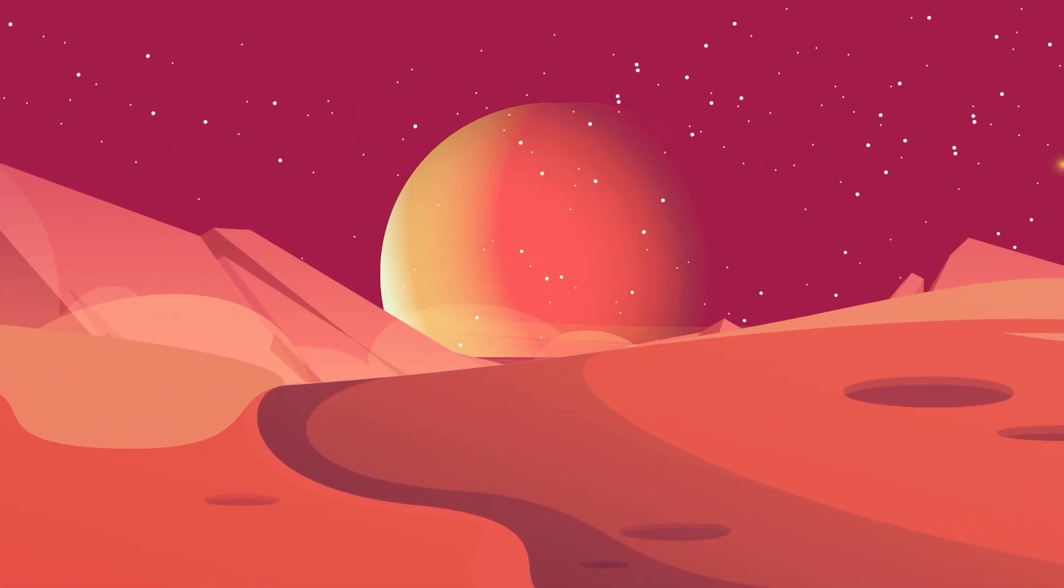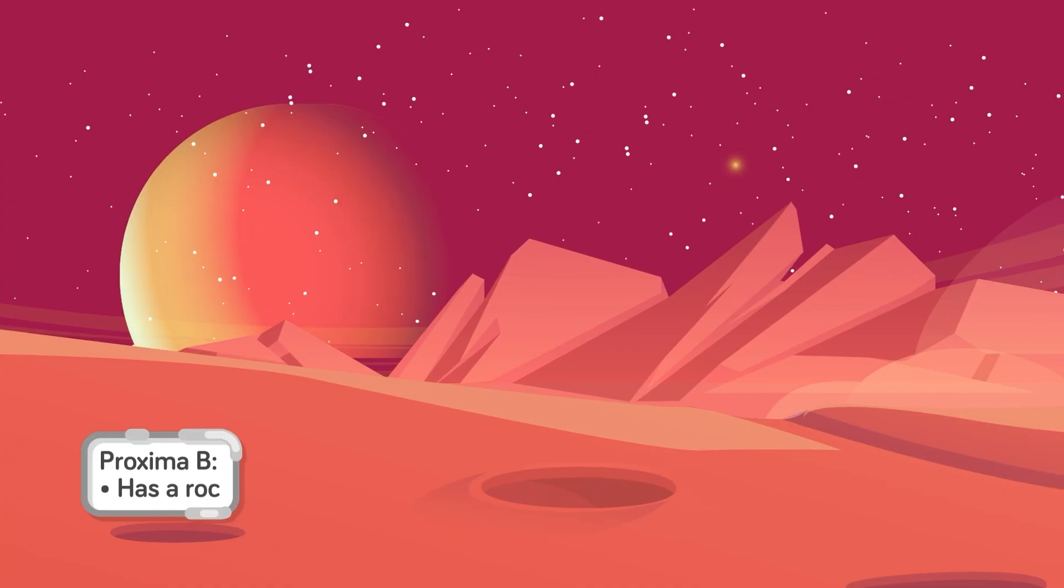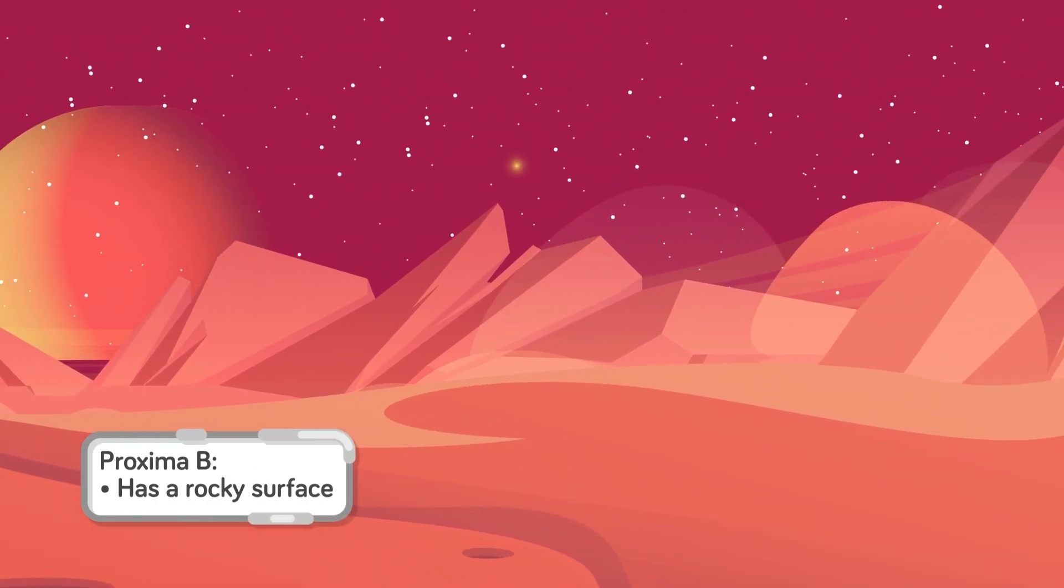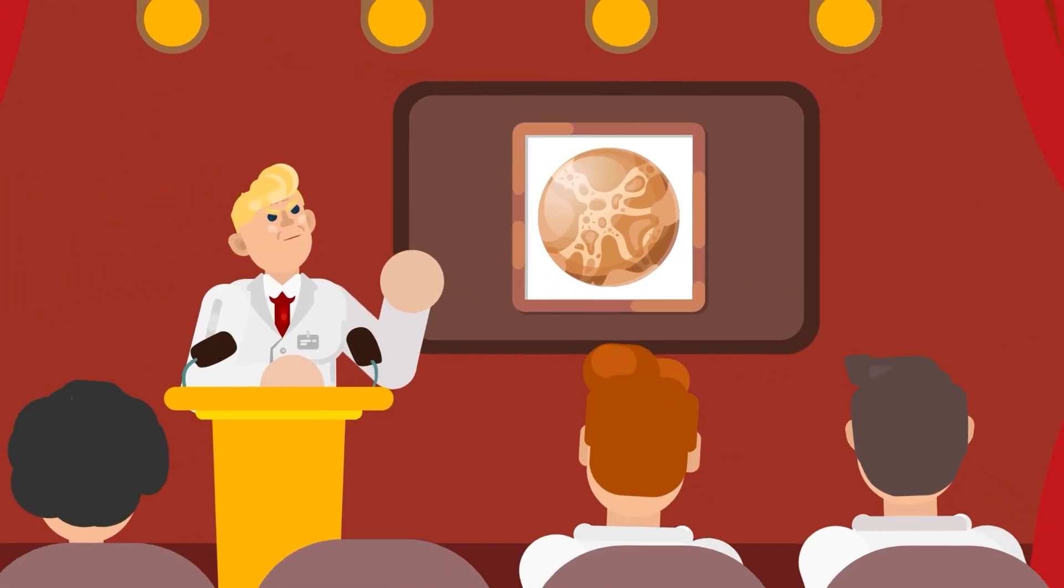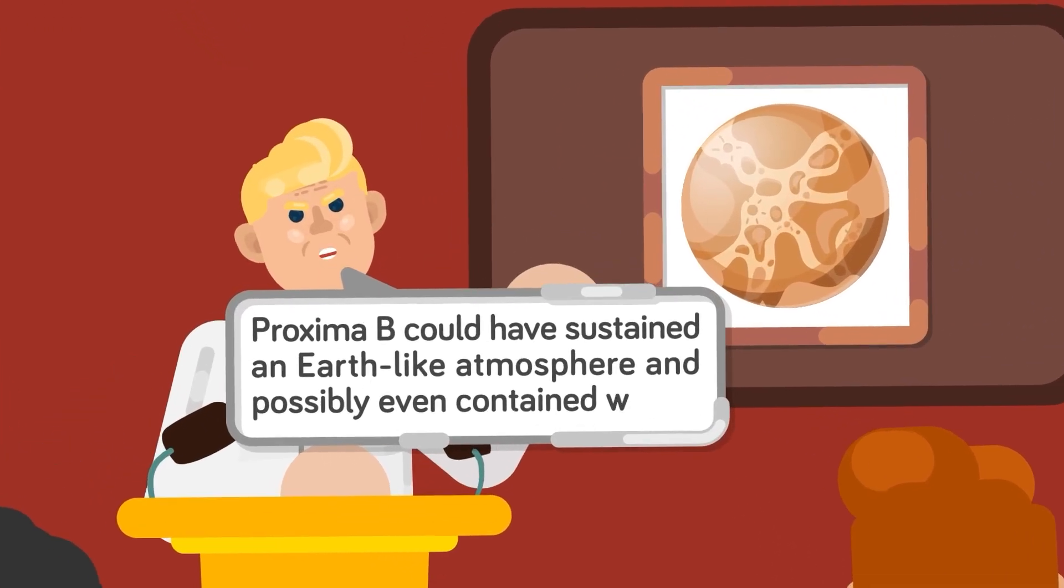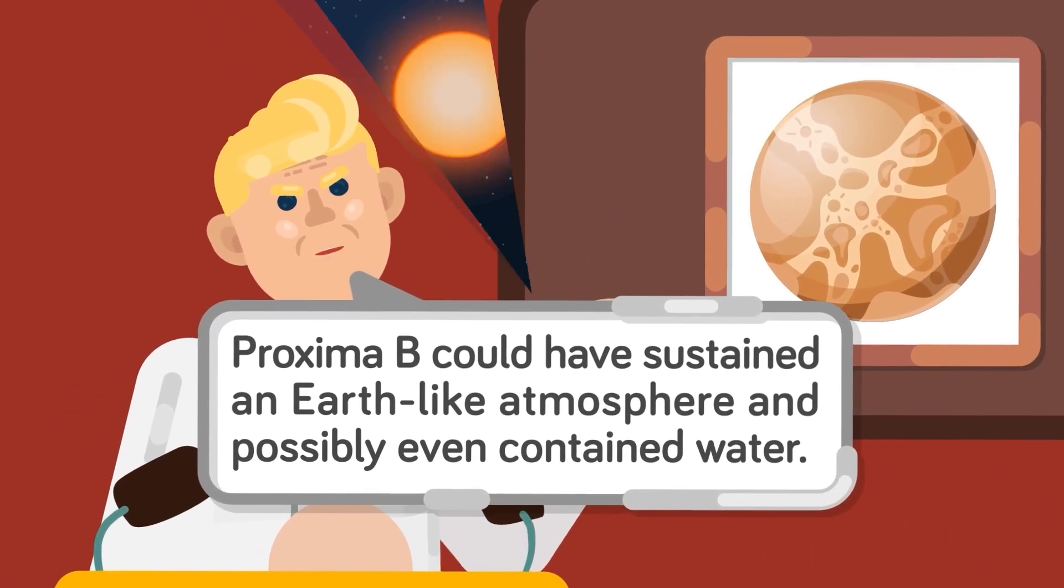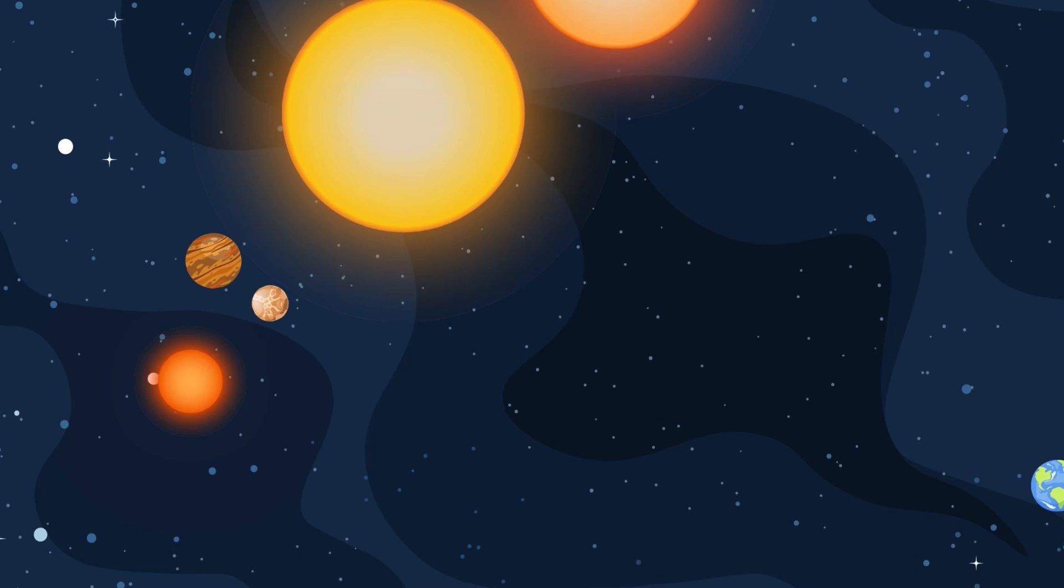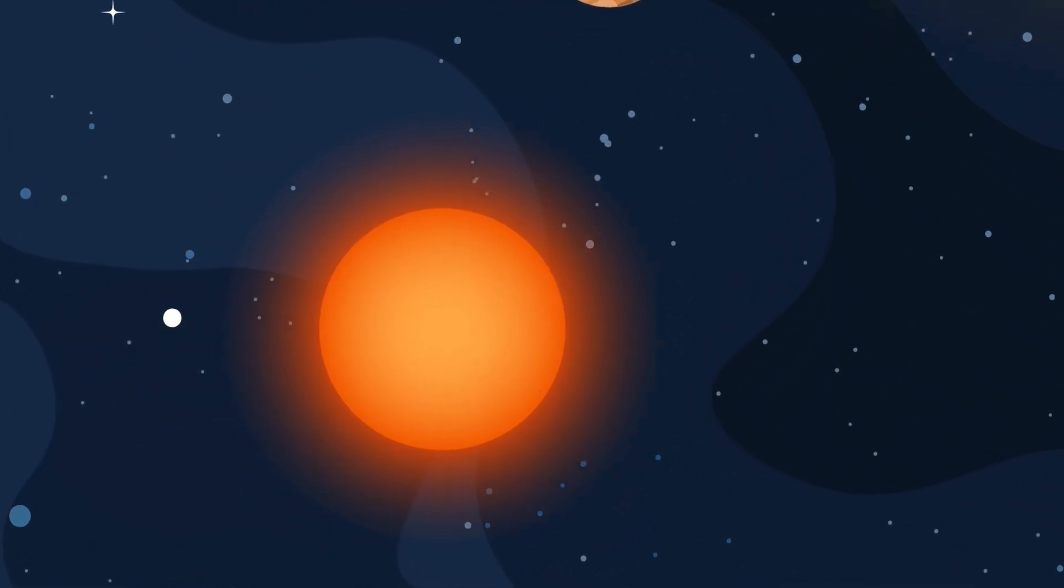Unlike Neptune, and even a number of other worlds in our own solar system, Proxima B does have a rocky surface. It's even widely believed that at some point in history Proxima B could have sustained an Earth-like atmosphere, and possibly even contained water. However, the greatest danger of Proxima B is its home star, Proxima Centauri.